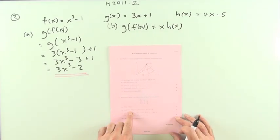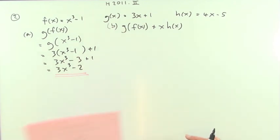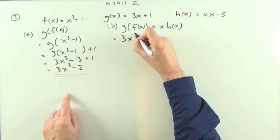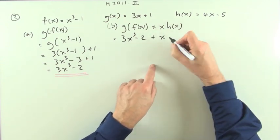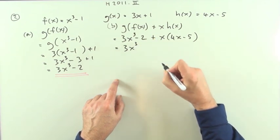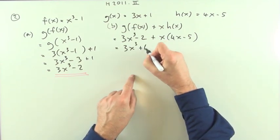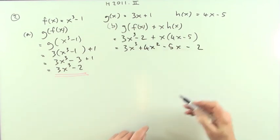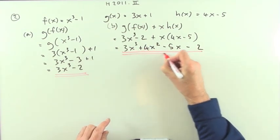Part b, show that g of f of x plus x times h of x gives this expression here. Well, already got g of f of x there, it is 3x cubed minus 2, plus x times, now what's h of x? It's this: 4x minus 5. So all together I've got 3x cubed, I could put them in order as I multiply them out, plus 4x squared minus 5x, and then put the minus 2 last, just to save me having to write that line out twice, just shuffling the terms about slightly.